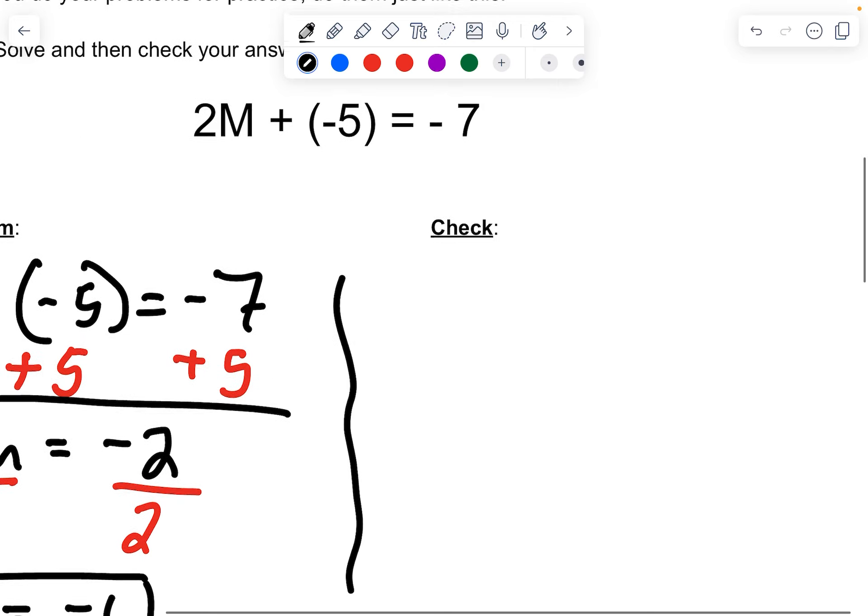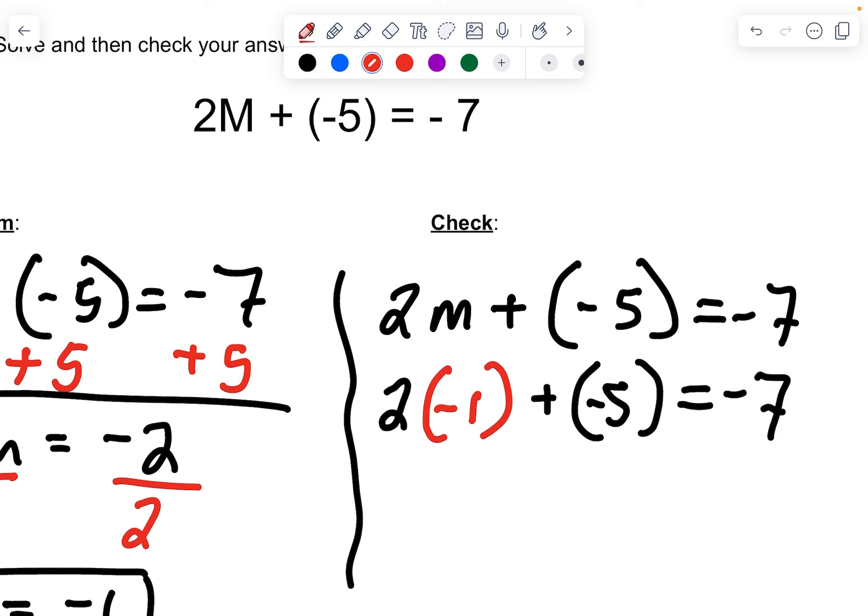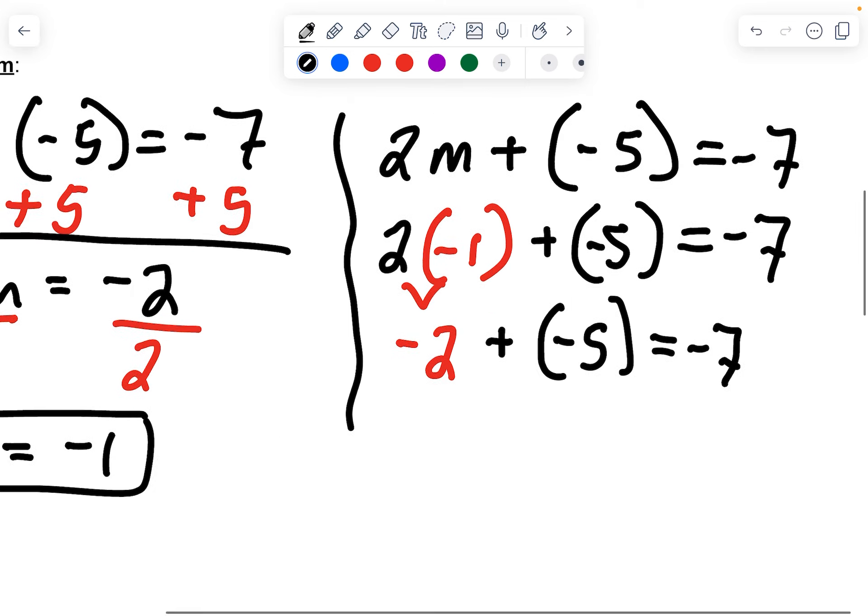Now I'm going to go over and start my check. Again, write the original problem. I'm going to take out the m, and I'm going to put in negative 1. Do order of operations. 2 times negative 1 is negative 2. Add negative 5. And negative 2 plus negative 5. Notice it's an addition, which is great. I'm going to go negative 7 equals negative 7, and it works.